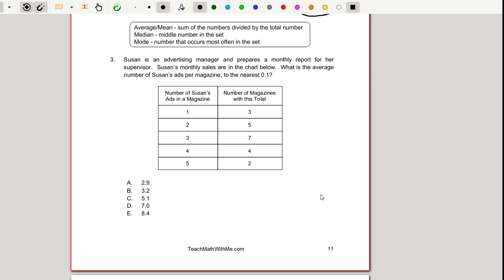For question three, we are given a chart here and be prepared to look at different charts on the ACT and feel comfortable with those. We are told that Susan is an advertising manager and this is a monthly report of her monthly sales in this chart and we're asked for the average number of Susan's ads per magazine to the nearest 0.1. We know from this first column that the number of Susan's ads in a magazine can range from one to five and then our right hand column tells us how many magazines have each of those numbers of ads in their magazines.